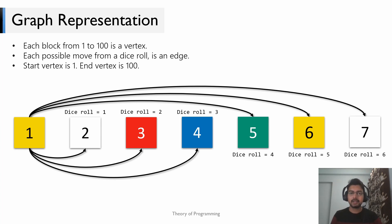Similarly, you would have six edges coming out of block 2, six edges coming out of block 3, and so on. Note that you would have only one edge coming out of block 99, because there's only one possible move from block 99 — when your dice roll outcome is 1, you move from block 99 to block 100. So block 99 has one edge, block 98 has two edges, block 97 has three edges, and so on.